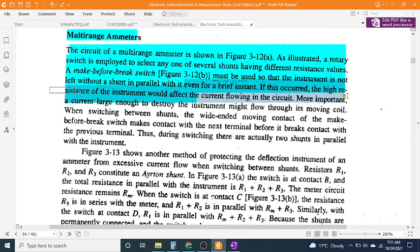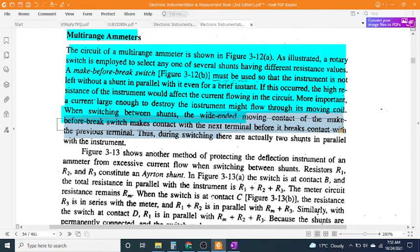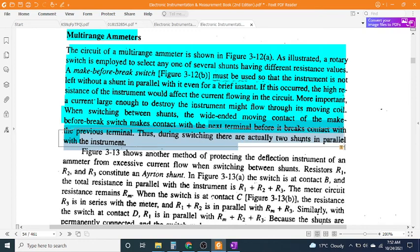More importantly, a current large enough to destroy the instrument might flow through its moving coil. When switching between shunts, the wide-ended moving contact of the make-before-break switch makes contact with the next terminal before it breaks contact with the previous terminal. Thus, during switching there are actually two shunts in parallel with the instrument.